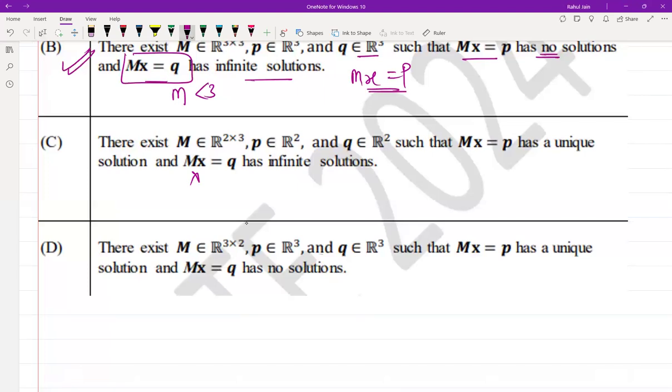For Mx = p, if it has a unique solution, M must have full column rank—whose rank should be 2—and p must be in the column space of M. Even though M has more rows than columns, if p is in the column space, we can find a unique solution since the system is overdetermined but consistent.